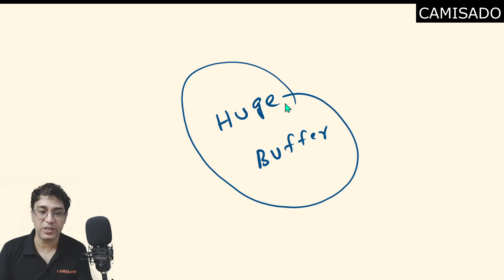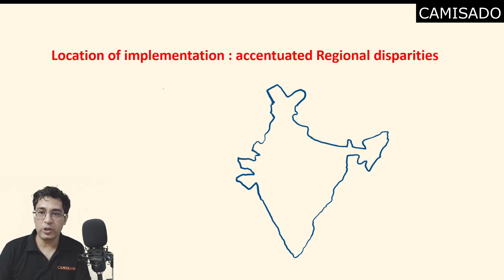Green revolution was implemented most vigorously in the northwestern part of the country. This region consisting of Punjab, Haryana, and western UP. Now this region was chosen on purpose because wheat was agroclimatically most suitable for this region on account of